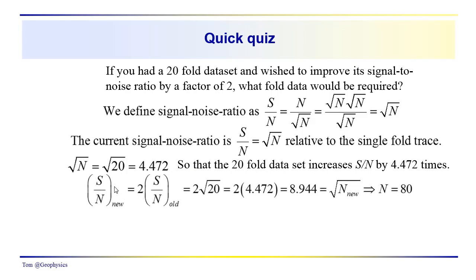Now the new signal-to-noise ratio is going to be twice the old. So we have 2 times the square root of 20. Remember, square root of 20 is just the signal-to-noise ratio here. So we have 2 times 4.472. That gives us 8.944. We know that's the square root of the number of traces that we would need in order to improve our signal-to-noise ratio by a factor of 2. So that gives us N equal to 80. We'd actually have to collect 4 times as many traces in order to double the signal-to-noise ratio.